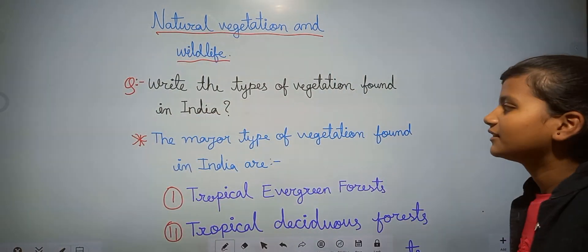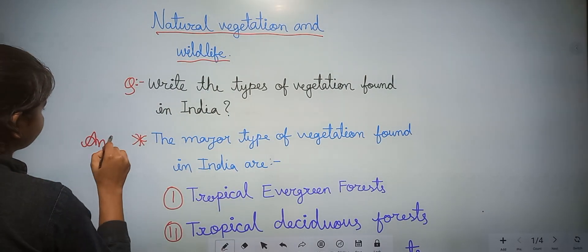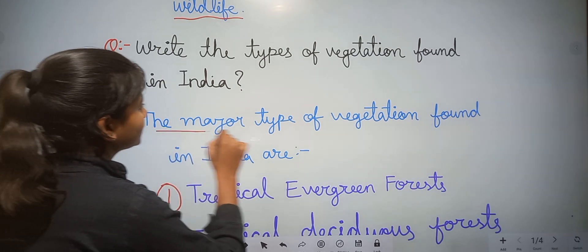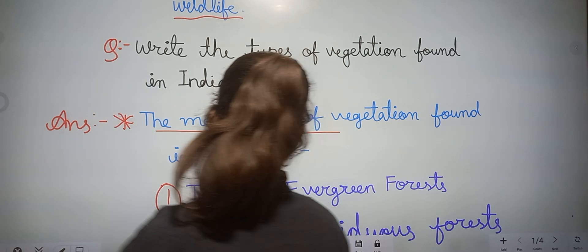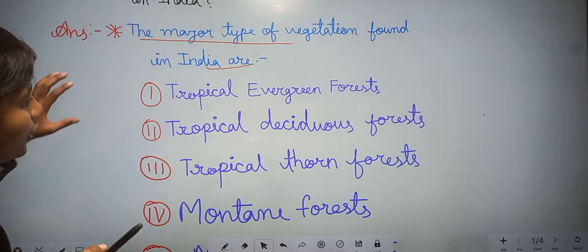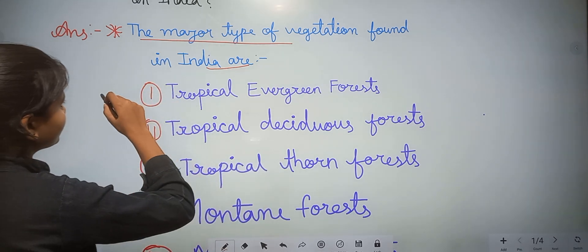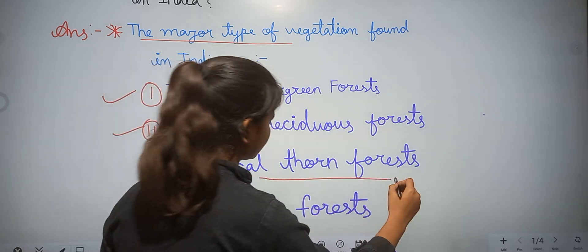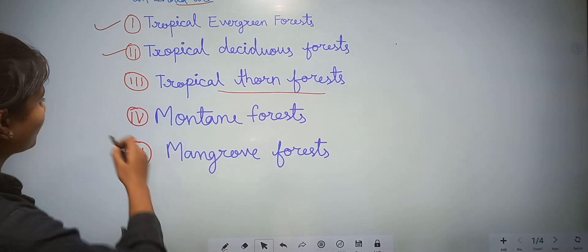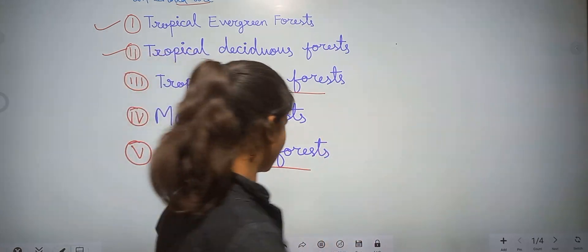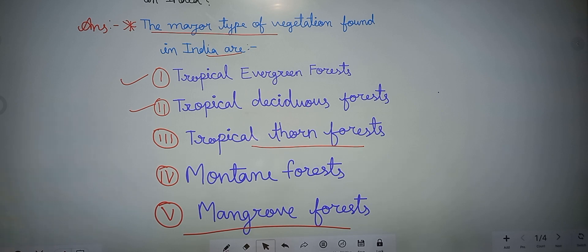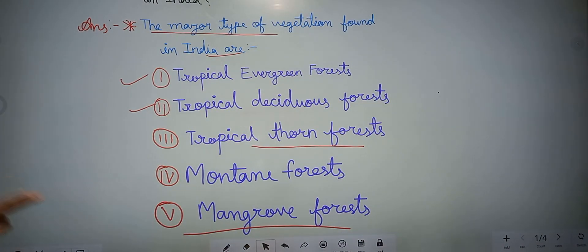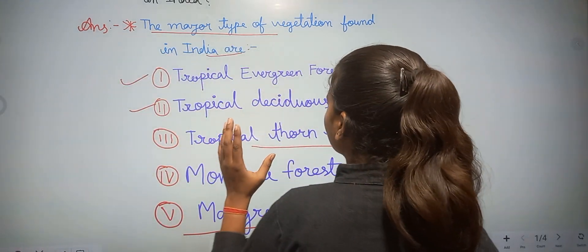The major types of vegetation found in India — there are five types. First is tropical evergreen forest, second is tropical deciduous forest, third is tropical thorn forest, fourth is montane forest, and last is mangrove forest. So there are five types of vegetation found in India.